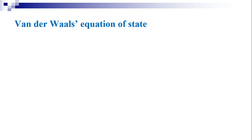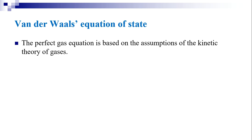Now we shall discuss the Van der Waals equation of state. In the deduction of the ideal gas equation PV = RT, it was assumed that the size of the gas molecules is negligible and that the force of attraction or repulsion between molecules is also negligible. Experiments by Andrews, Amagat, and others showed that PV = RT does not describe the true behavior of actual gases except under some conditions.